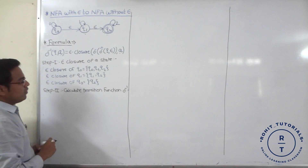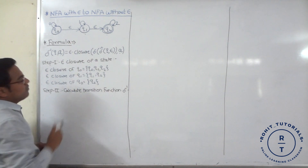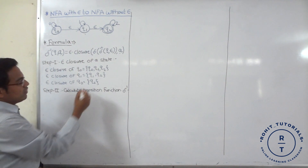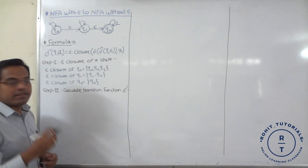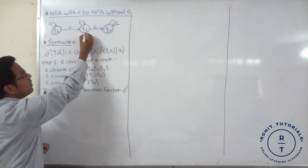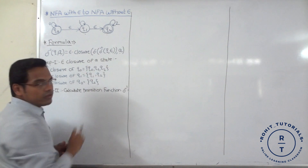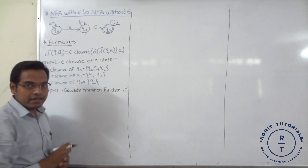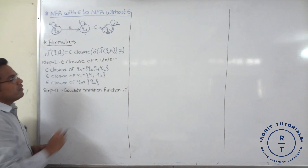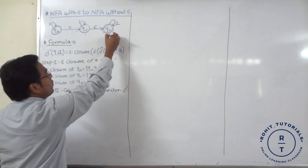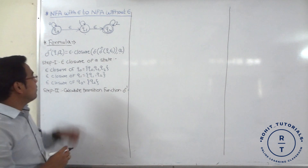For the epsilon closure of Q1: from Q1 we reach Q1 itself and Q2 with the help of epsilon as a symbol. So epsilon closure of Q1 is {Q1, Q2}. And third, epsilon closure of Q2 reaches only itself with the help of a null symbol, so epsilon closure of Q2 is {Q2}.